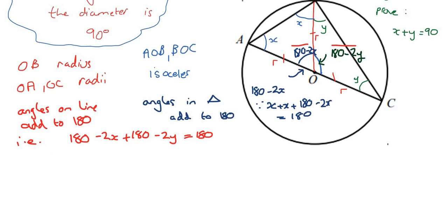And we can, of course, simplify this. So we get 360 minus 180 equals 2X plus 2Y. So 2X plus 2Y equals 180.